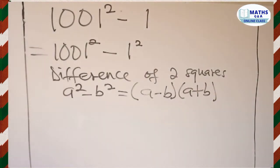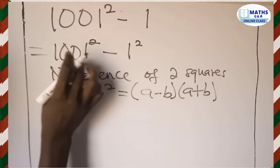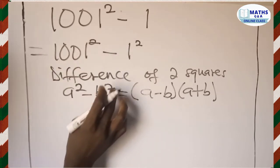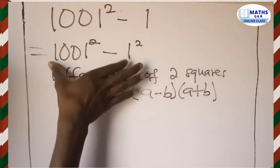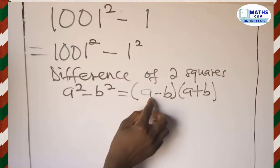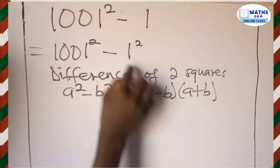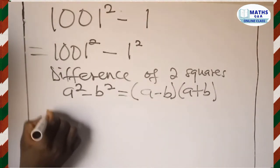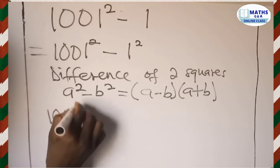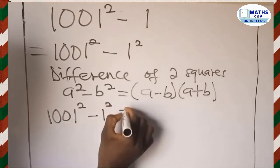In place of a squared we have 1001 squared, and in place of b squared we have 1 squared. So we replace a with 1001 and b with 1. We rewrite this as 1001 squared minus 1 squared.